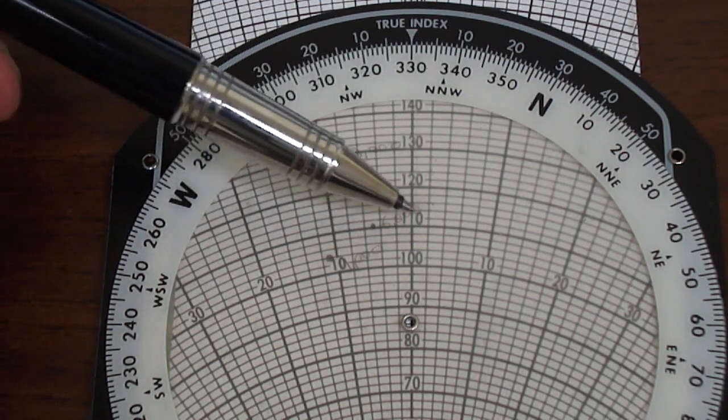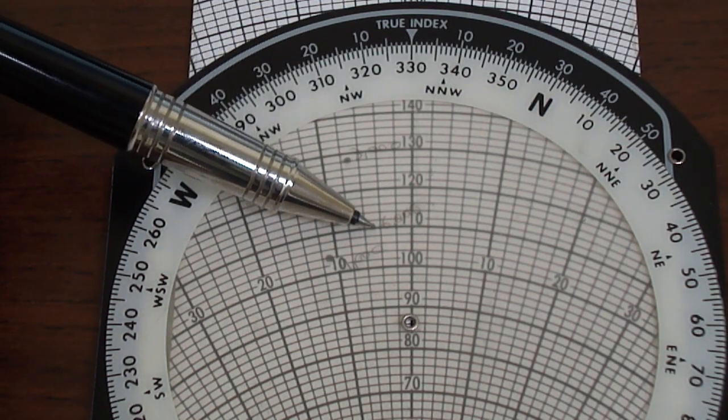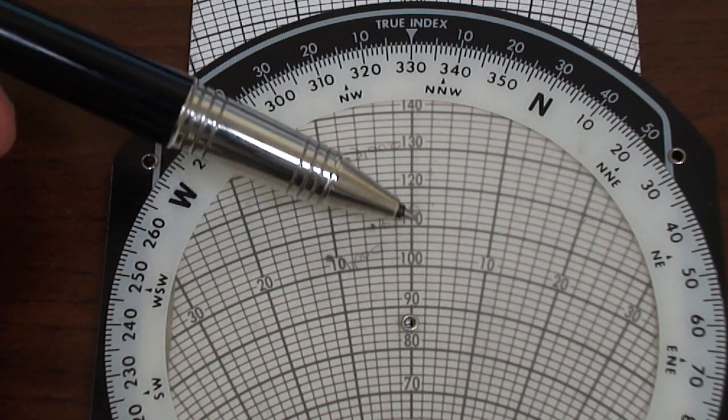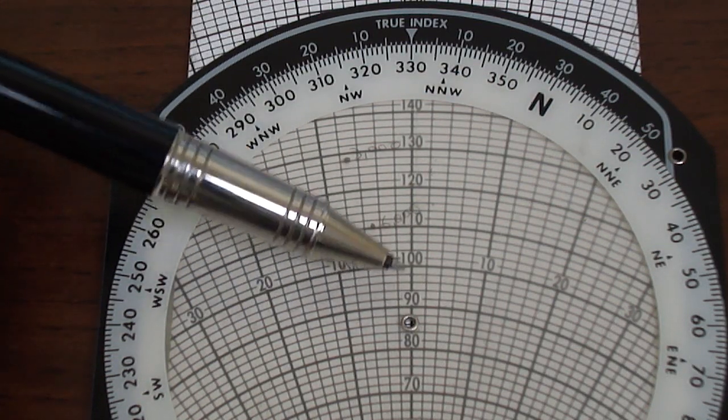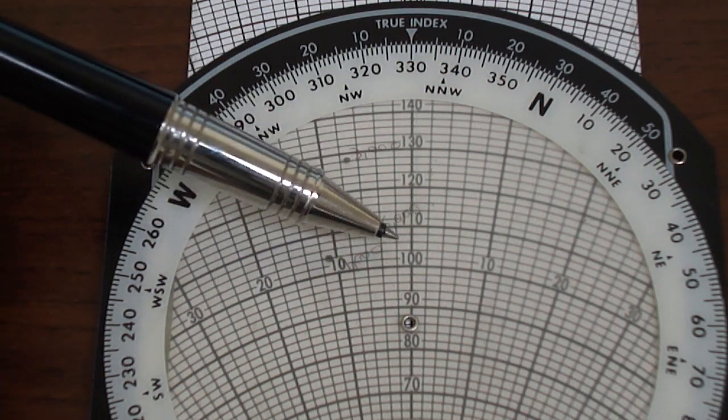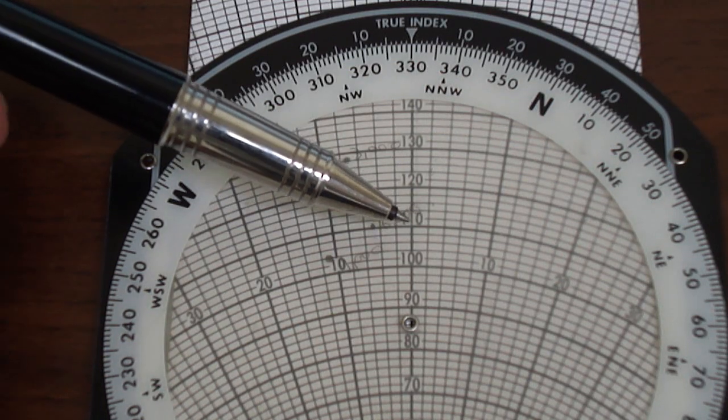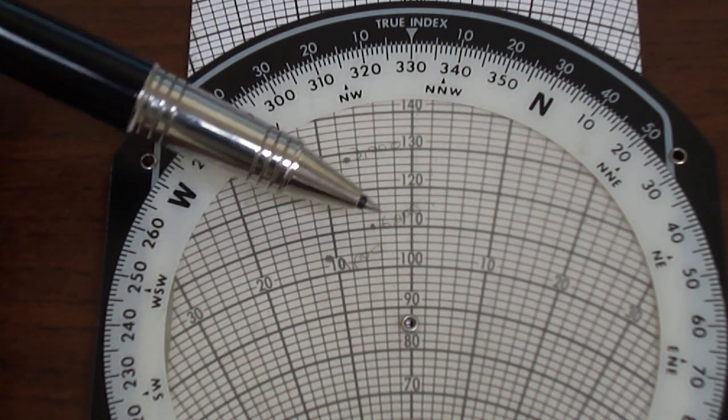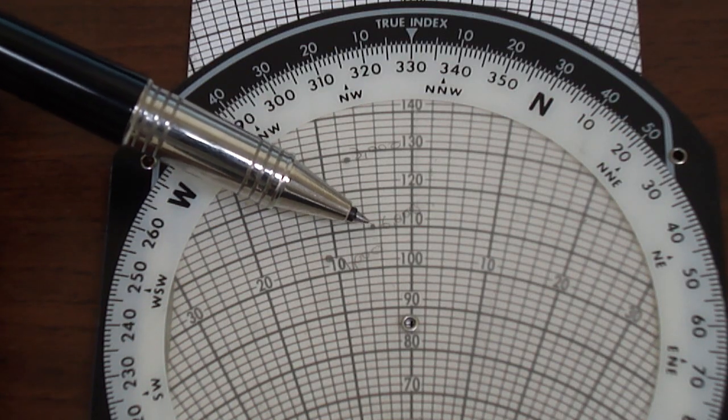6,000 feet at 110 knots only has a 5 degree to the left or minus 5 wind correction angle and a ground speed of 85 knots. For only a sacrifice of 5 knots we have half the amount of wind drift, which is going to decrease our chances of getting blown off course if we are not careful and precise in our navigation.